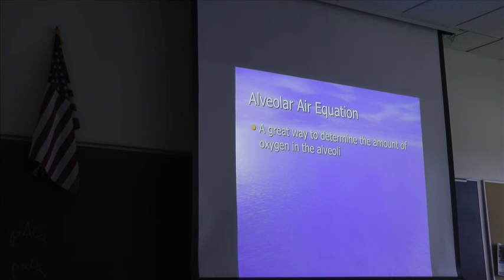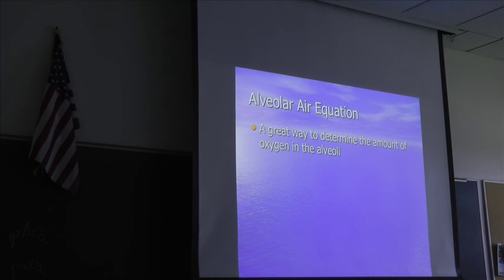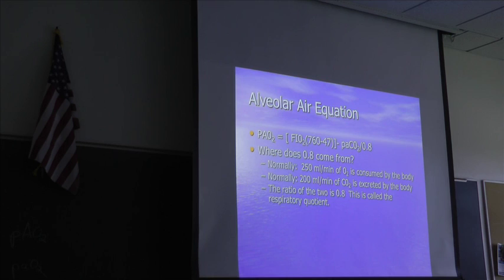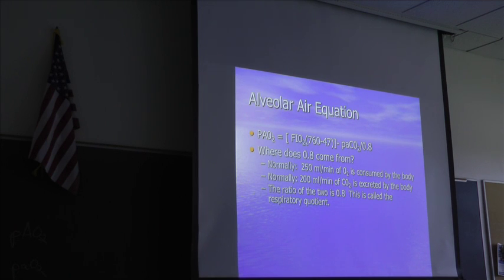So let me give you the alveolar air equation. We can figure out the PAO2 — pressure of oxygen in the alveoli — using a formula. The purpose of the alveolar air equation is to figure out the amount of oxygen that's in the alveoli. When doing this equation, remember to do what's in the brackets first before you subtract anything.